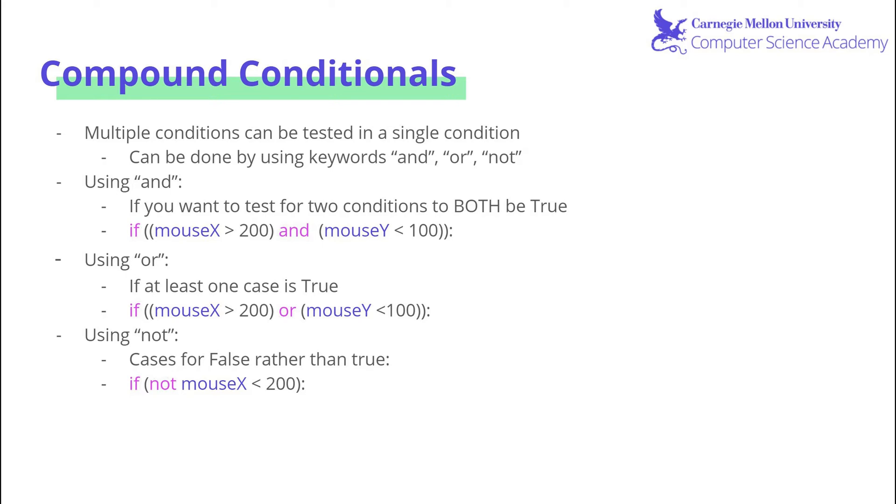If we decide to use and, we can connect two different conditions and test for both of them to be true. So if we want mouseX to be greater than 200 and mouseY to be less than 100, this would be true only when both cases are true.